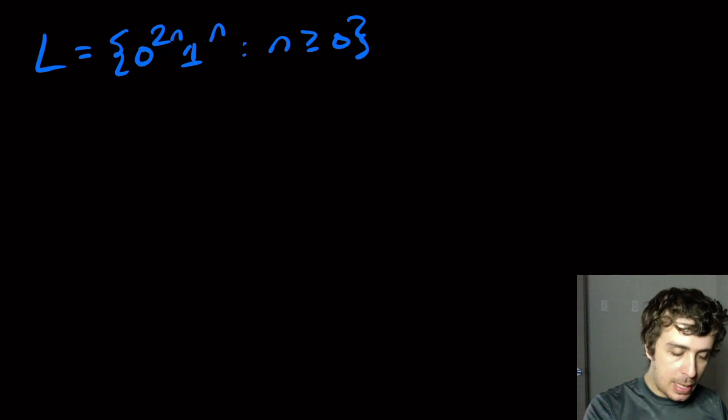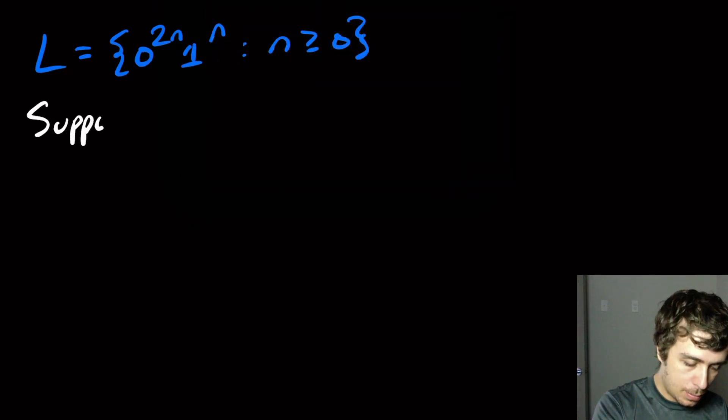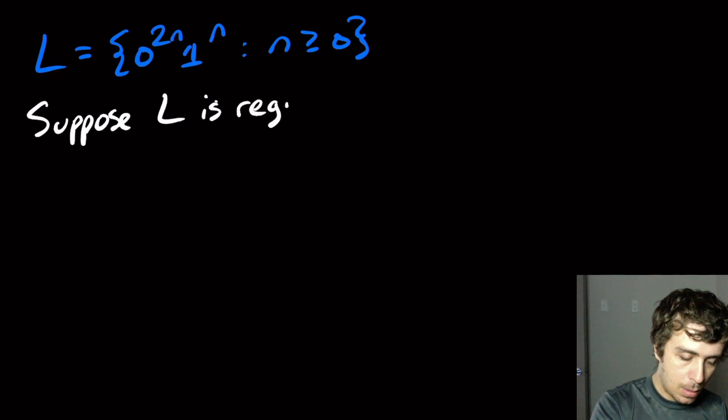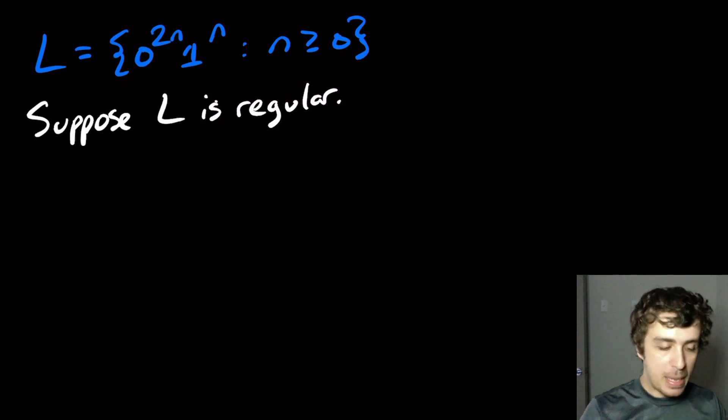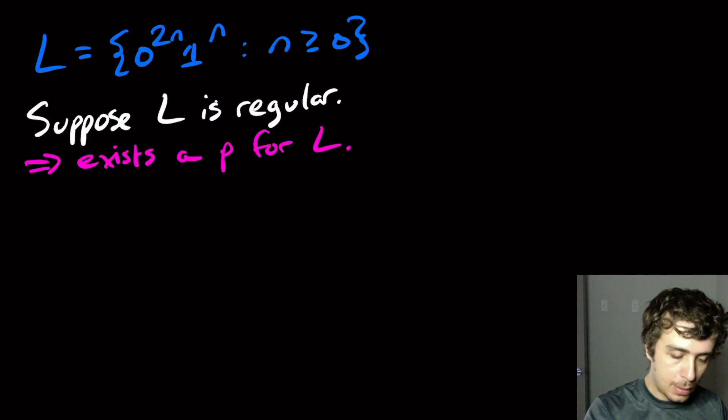So here we'll use a standard pumping lemma proof technique. Let's suppose that L is regular. Then, as always, we need to pick a pumping constant p. Not p, we know that there is a pumping constant p for this language. So there exists a p for this language. I'm just shorthand saying pumping constant here.